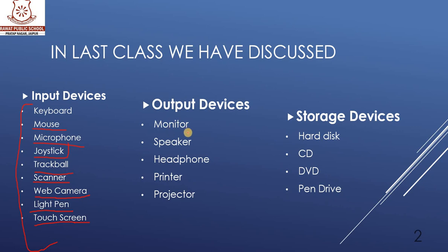The first output device is monitor. What is a monitor? A monitor displays objects such as text and images on a computer. We can view text and images on a computer through the monitor. Next one is speaker.